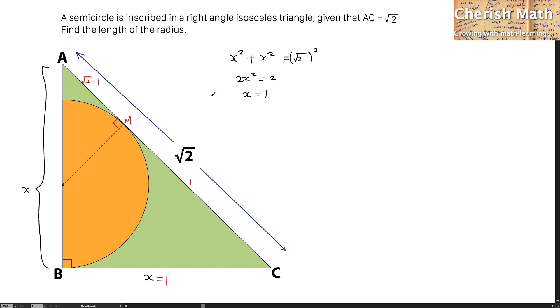Since the triangle ABC is an isosceles triangle, that makes angle A 45 degrees and angle C 45 degrees as well.